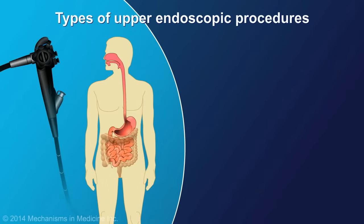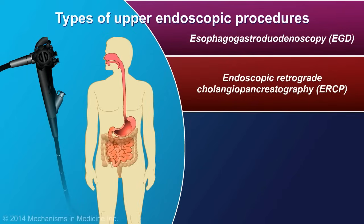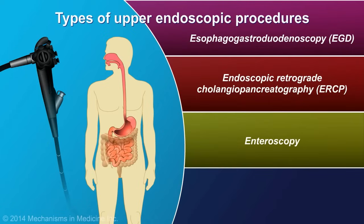Depending on what is being examined, several other types of endoscopic procedures can be used. Esophagogastroduodenoscopy, or EGD, is used to examine the lining of the esophagus, stomach, and duodenum. Endoscopic retrograde cholangiopancreatography, or ERCP, is used to diagnose and treat a specific disease within the pancreatic or bile ducts. Enteroscopy is used to examine deeper into the small bowel and is useful when other imaging techniques have shown an abnormal finding that can't be reached using EGD or colonoscopy.